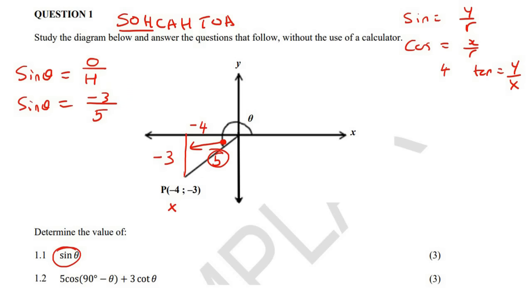And there we go. So that's the answer, negative 3 over 5. You don't have to go any further. They didn't ask you for theta. They're just asking you for sin theta. And there you found sin theta. Now, going on to this next part.